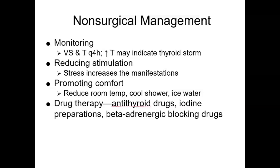Reducing stimulation helps prevent increasing the symptoms of hyperthyroidism and the risk for cardiac complications. Encourage the patient to rest. Keep the environment quiet by closing the door and limiting visitors. Eliminate or postpone any non-essential care or treatments. Promoting comfort includes reducing the room temperature to decrease discomfort caused by heat intolerance. Instruct the UAP to ensure that the patient always has a fresh pitcher of ice water and to change the bed linen whenever it becomes damp from diaphoresis. Suggest that the patient take a cool shower or sponge bath several times a day.